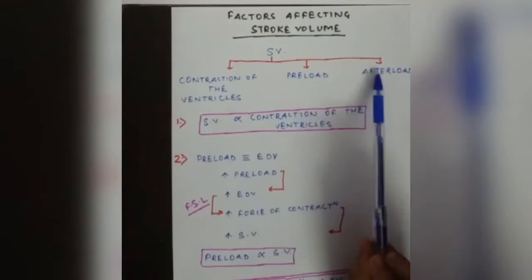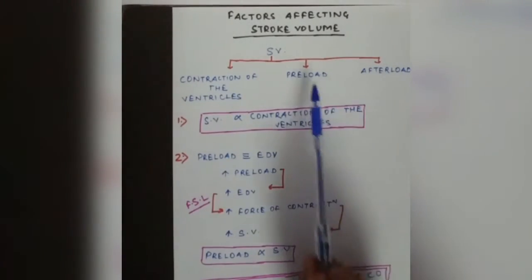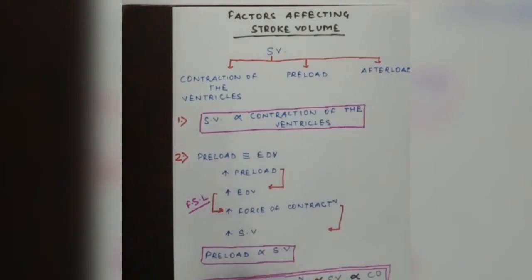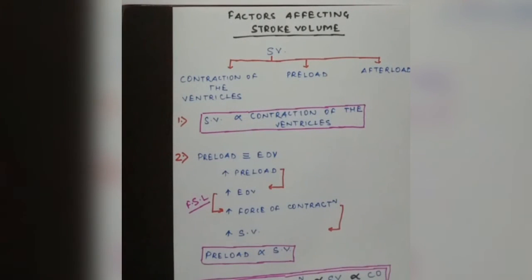These are the three factors affecting stroke volume which we have to understand: preload, afterload, and Frank-Starling law. This was basically preload, afterload, and the Frank-Starling mechanism.